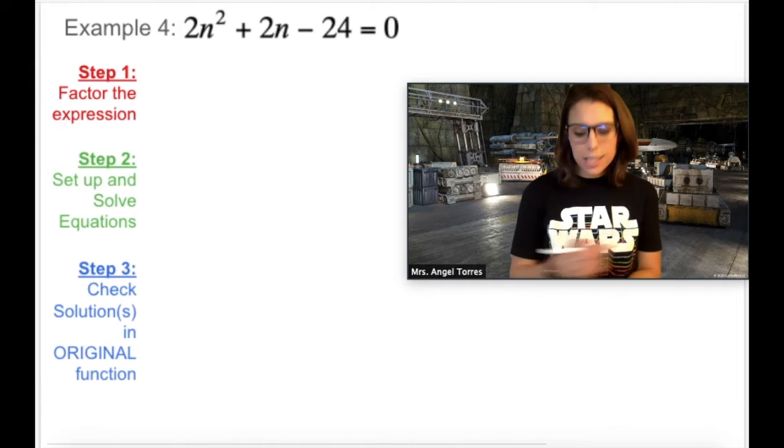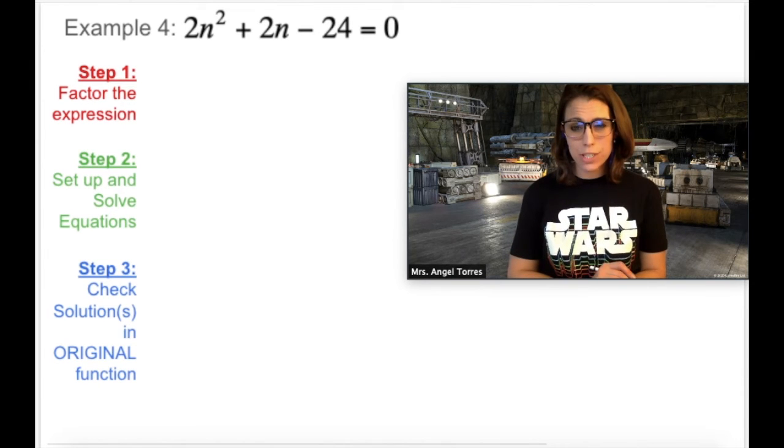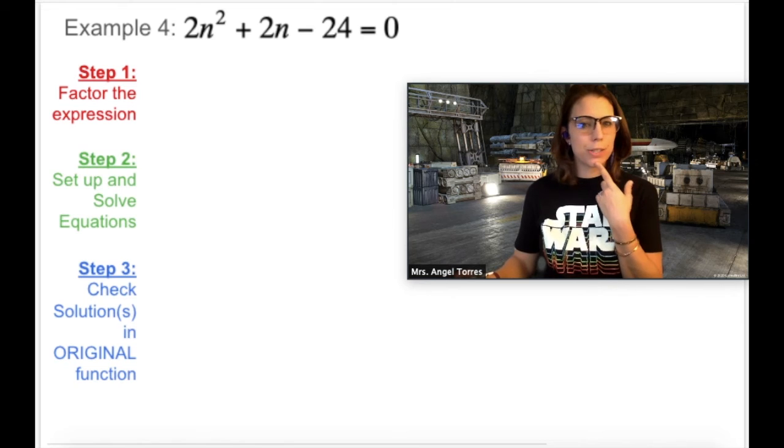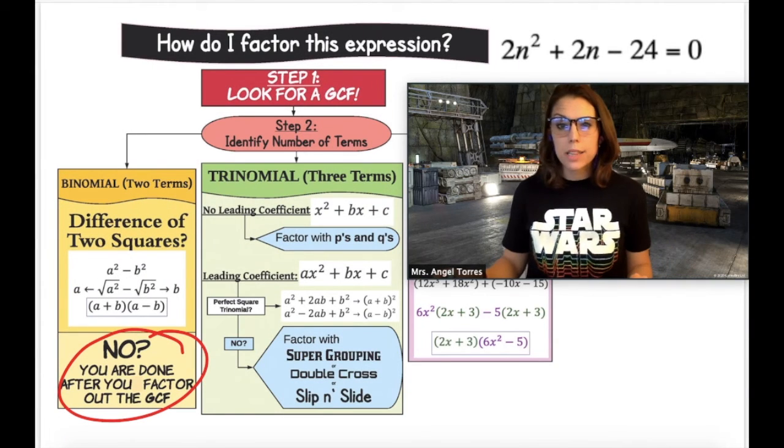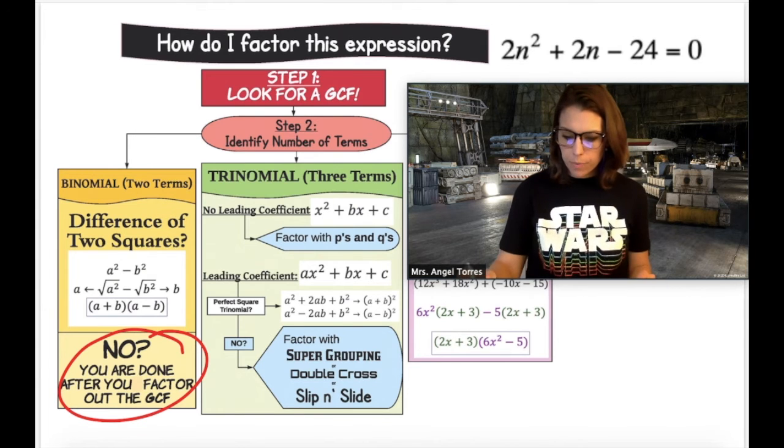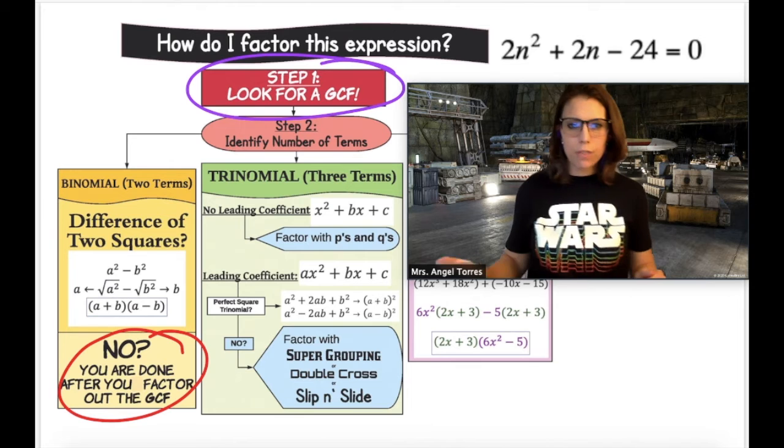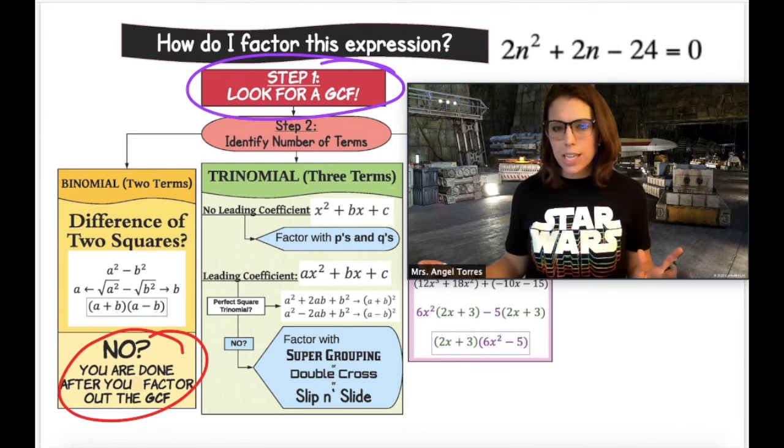Final example. And this one's a little tough because we have a trinomial, but this time we have a leading coefficient. So let's take a look at our factoring methods to figure out what we're going to do here. Trinomial with a leading coefficient. So the first thing we look for, actually, before even that, step one is always to look for a GCF before even going into the green box.